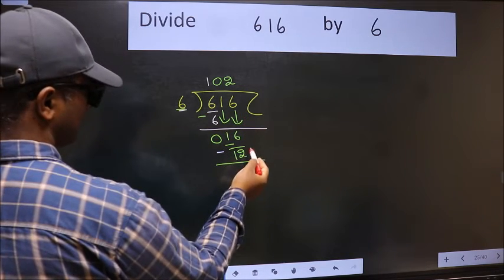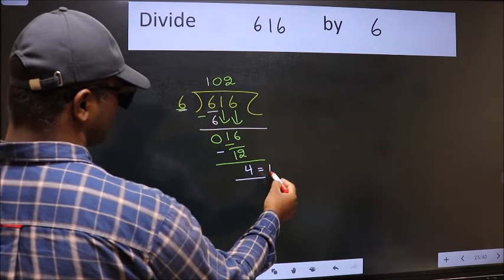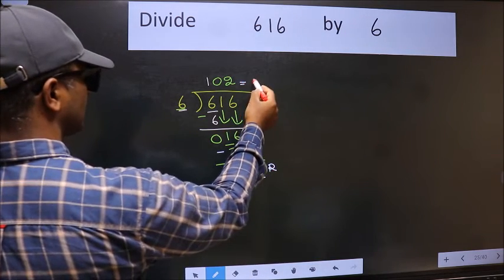No more numbers to bring down. So we stop here. This is our remainder and this is our quotient.